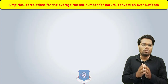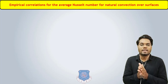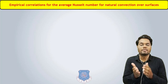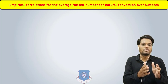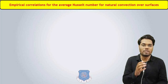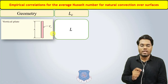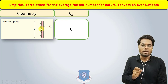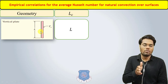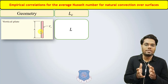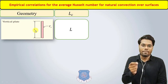The second thing we need to learn is how to decide the characteristic length, or the characteristic dimension, in the case of free convection. We need to look at the empirical correlations for the average Nusselt number for natural convection over surfaces. Suppose in a question we have a geometry like a plate in a vertical orientation. For vertical orientation, the characteristic dimension is going to be its height, or we can say its length — shown as capital L in the figure.